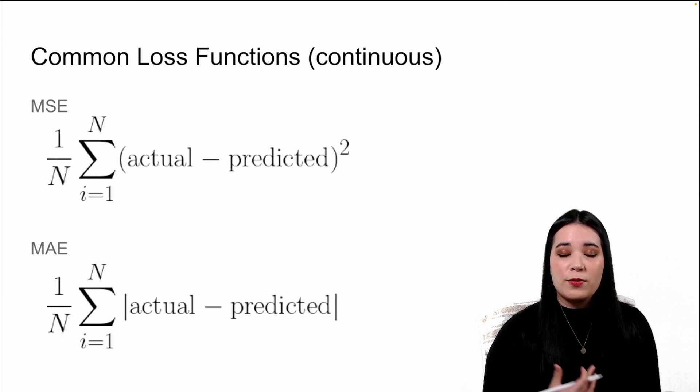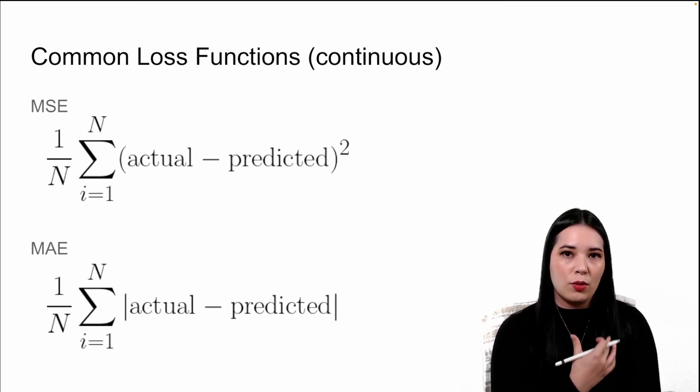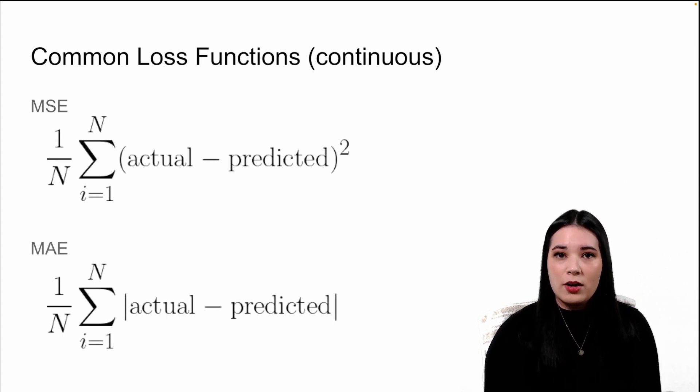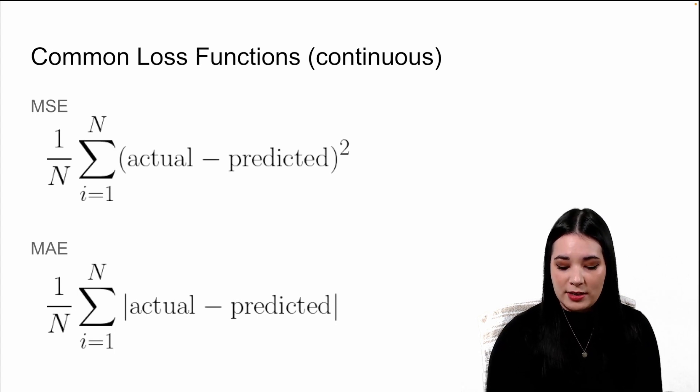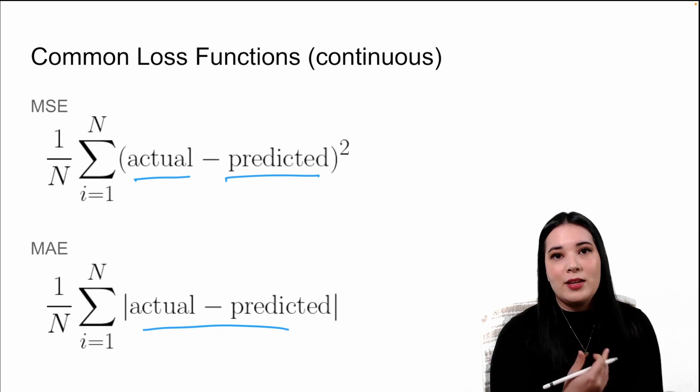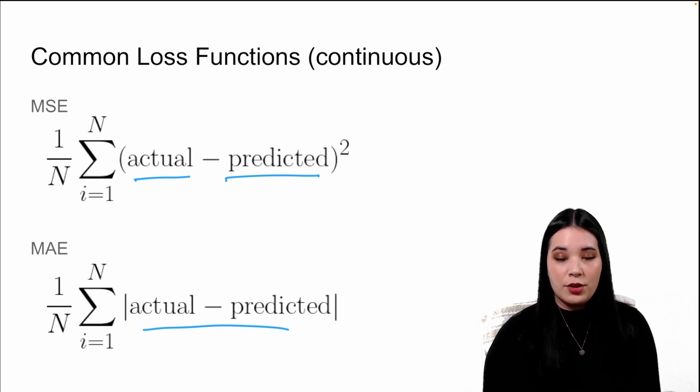For instance, if you're predicting a continuous value like height or weight or money, you might use something like a mean squared error or the mean absolute error. The mean squared error takes the difference between the actual value and our predicted value, squares it, adds it all together, and then divides by the number of samples. Similarly, the mean absolute error takes the actual minus predicted, or the error, takes the absolute value, and then divides it by the number of samples.